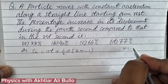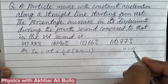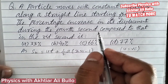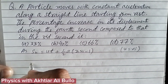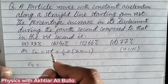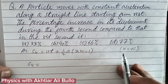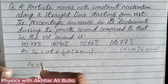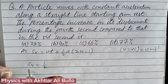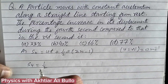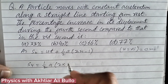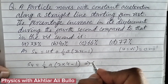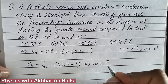Here u is equal to the initial velocity. Since the object is starting from rest, u = 0 m/s. So the displacement in the fourth second will be equal to s_4 = (1/2)a × (2×4 - 1). This gives the displacement in the fourth second as 7/2 a.